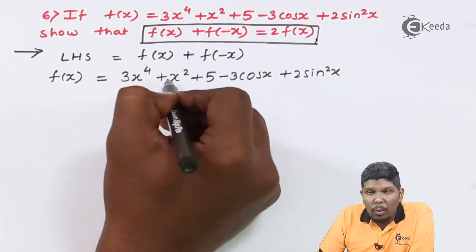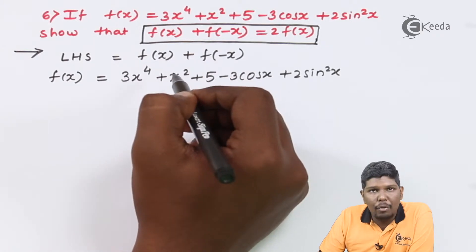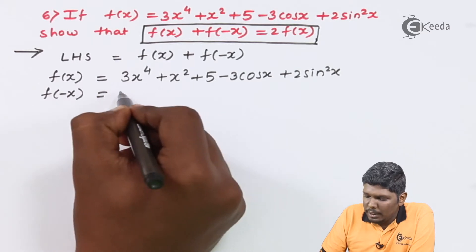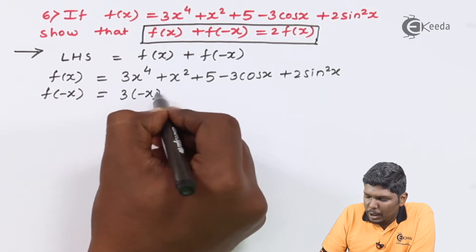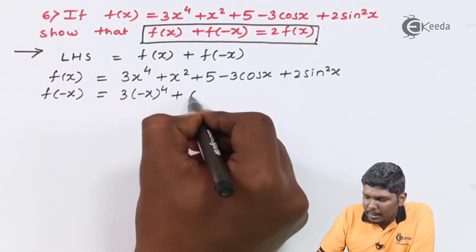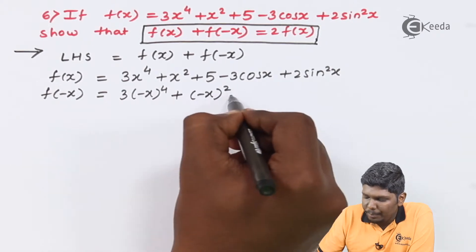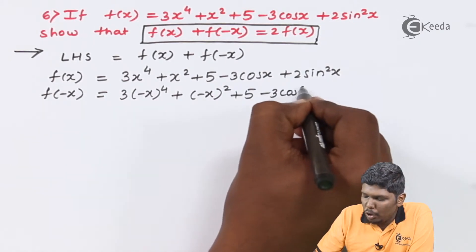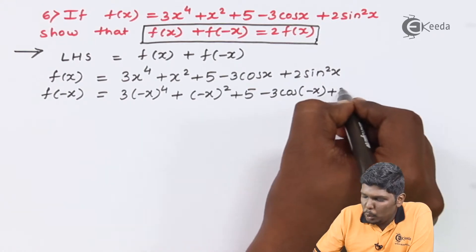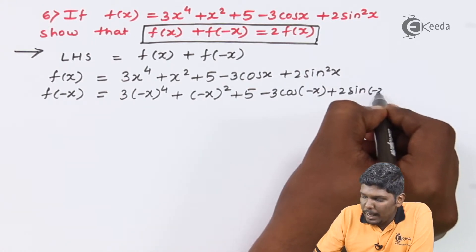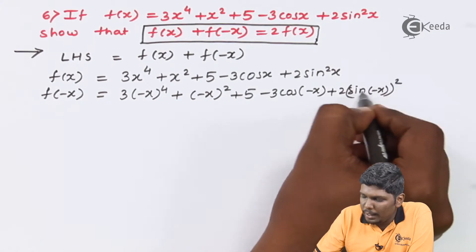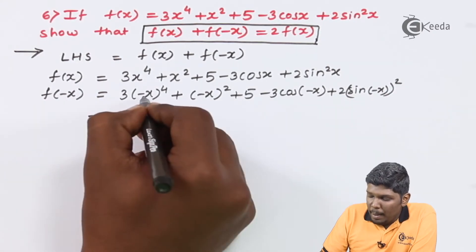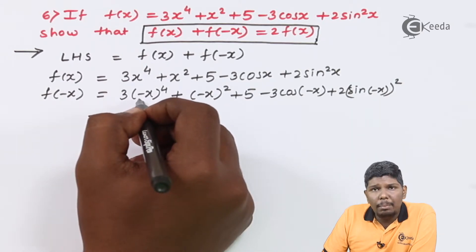This is the term we will require in the LHS. The second term is f(-x). For f(-x), just replace x by minus x. So this is 3(-x) raised to 4 plus (-x) squared plus 5, which is a constant, minus 3cos(-x) plus 2sin(-x) whole squared, or simply sine squared of (-x).